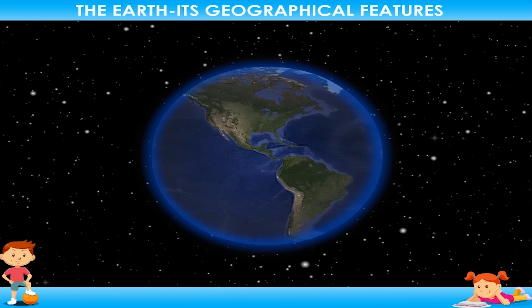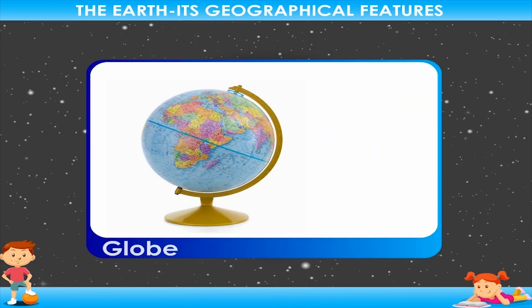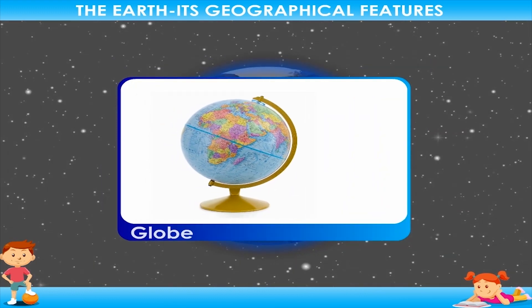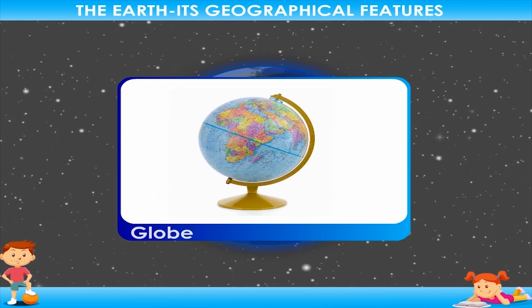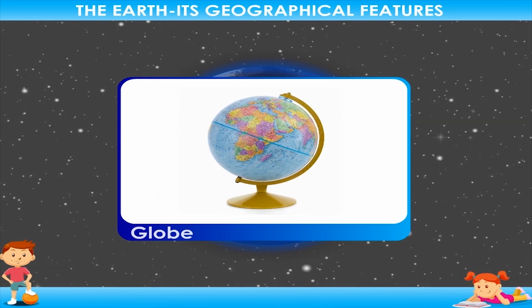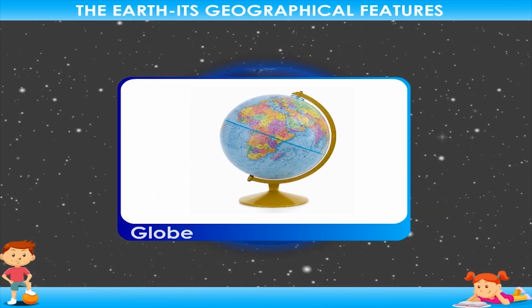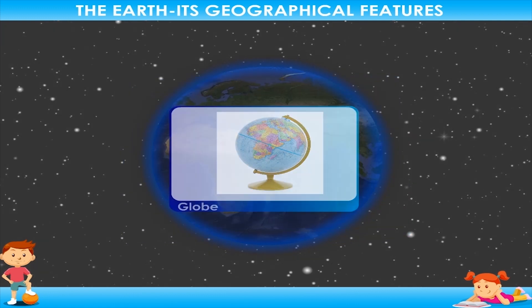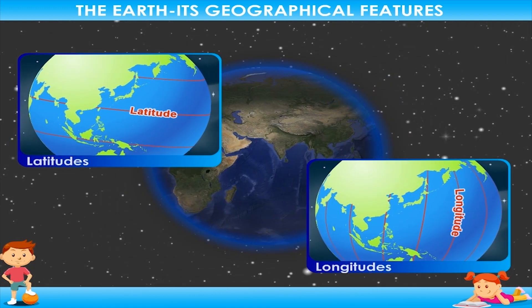The different parts of the Earth can be viewed on a globe. When we look at the globe, there are a number of lines on it. These lines are of two types: latitudes and longitudes.